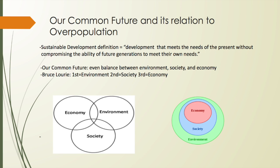One catastrophe that clearly displays that the world we live in is not practicing sustainable development is overpopulation. Overpopulated areas of the world continue to be exploited for their economic values and continue to grow at alarming rates. In Bruce Lurie's video about failed sustainability, he refers to a model mentioned in Our Common Future that focuses on an equal balance between the environment, society, and economy in order to create a sustainable society. Lurie then re-evaluates this model and says that our priority must be the environment, for without it nothing would exist, and then society and the economy fall behind.